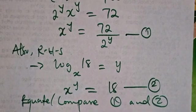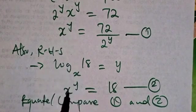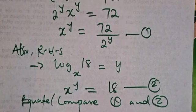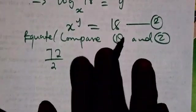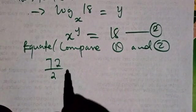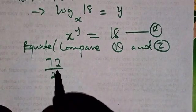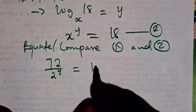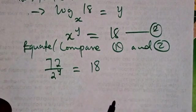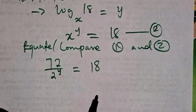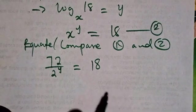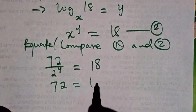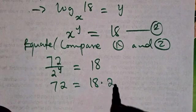If you compare 1 and 2, since x to power y here equals x to power y there, you can say that 72 over 2 to power y equals 18. From there, we have 72 equals 18 multiplied by 2 to power y.